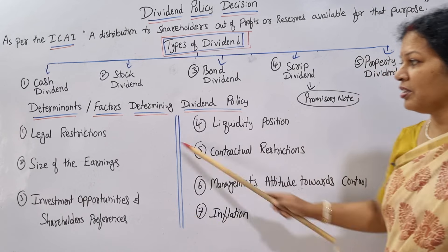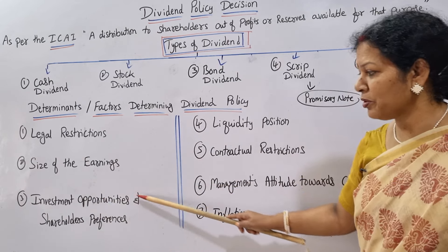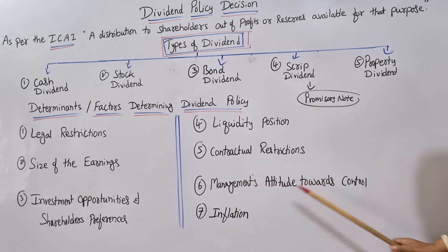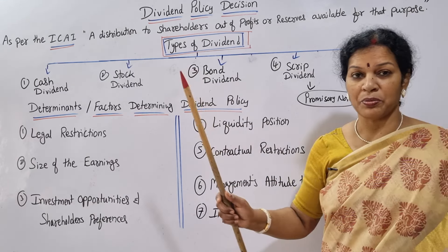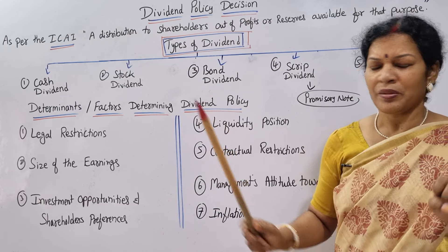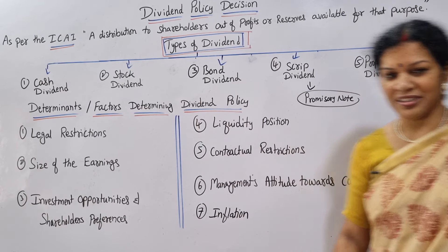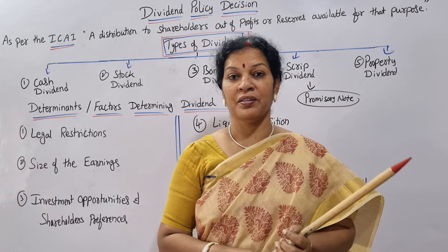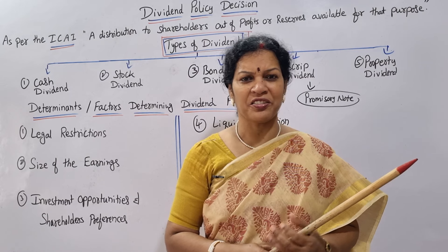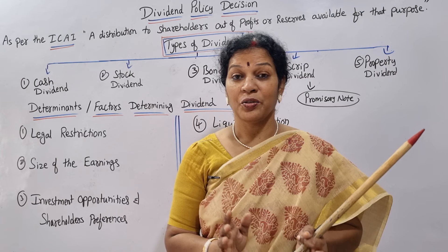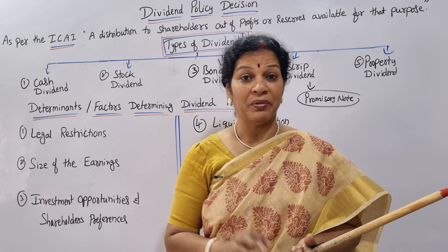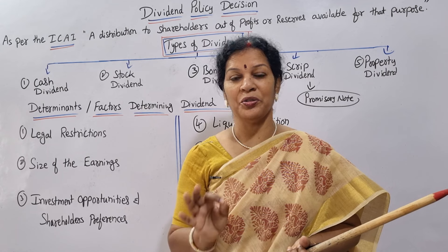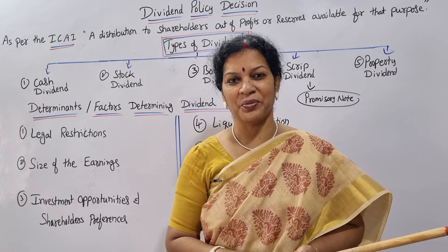So these are the factors affecting dividend decisions: legal restrictions, size of earnings, investment opportunities and shareholders' preferences, liquidity position, contractual restrictions, management's attitude towards control, and inflation. Today we discussed what dividend is and the five types of dividends. In the next class, we will cover the very important topic of dividend theories — similar to capital structure theories — which are important for examinations. Stay connected, check out the playlist, and don't forget to share this video. Good luck!